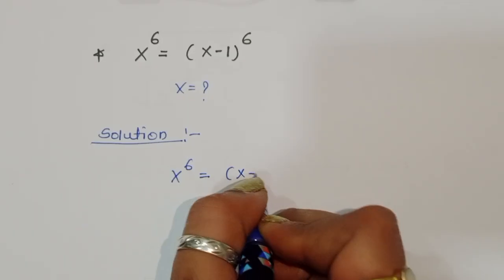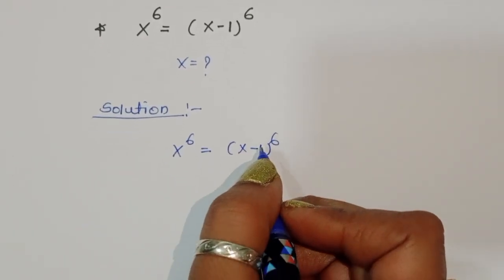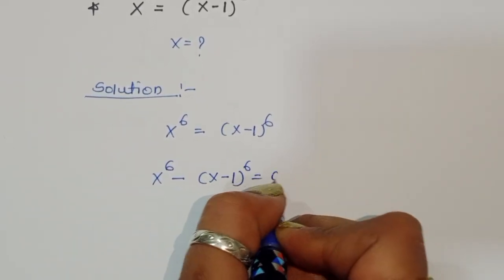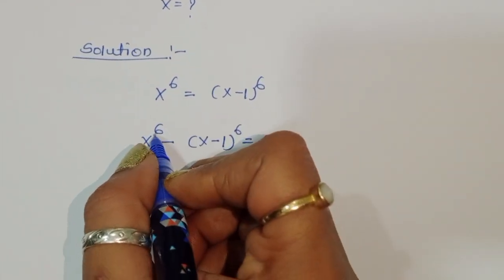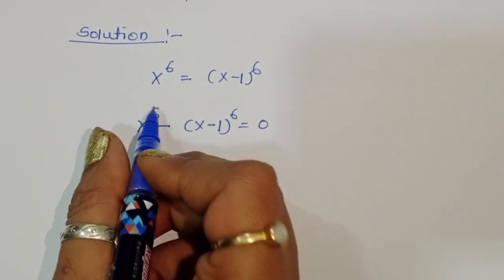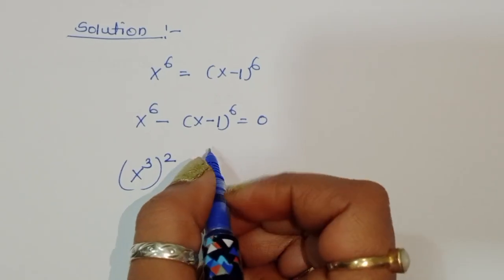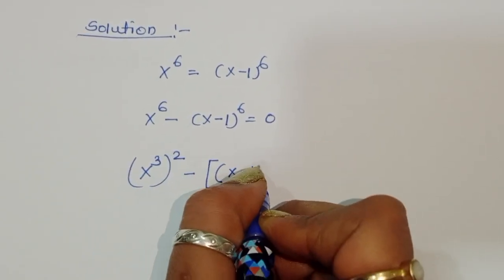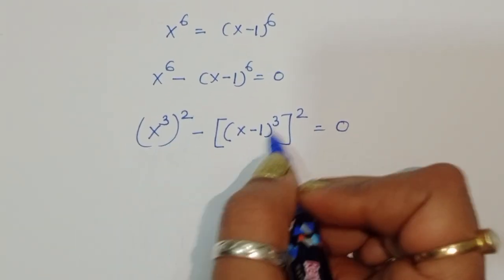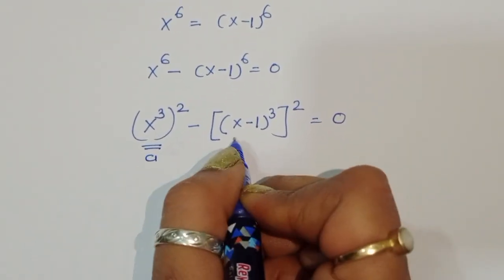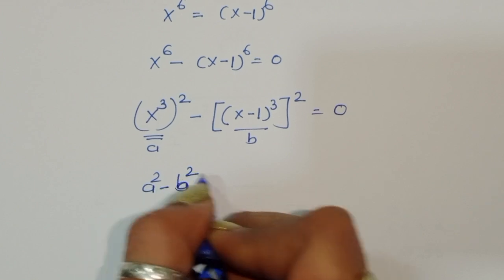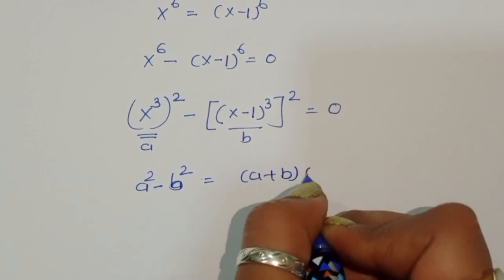x power 6 is equal to x minus 1 power 6. We can write this as x power 6 minus (x minus 1) power 6 is equal to 0. We convert the power 6 into square form: (x³)² minus ((x-1)³)² equals 0. This is of the form a² minus b², where a is x³ and b is (x-1)³. The formula is a² minus b² equals (a plus b)(a minus b).